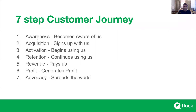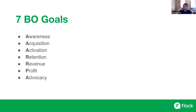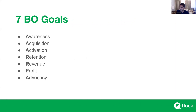So if I think of those seven steps, it's essentially: awareness, acquisition, activation, retention, revenue, profit, and advocacy. That's essentially what a customer would do with us at any point in time. If you look at all the business-facing departments, they will typically be working across one of these seven levels to optimize the right level. So these seven steps of a customer's journey also become the seven business objective goals. Any business objective you write will typically either increase awareness, improve acquisition, improve activation, improve retention, increase revenue, increase profit, or increase advocacy.